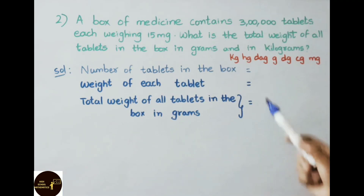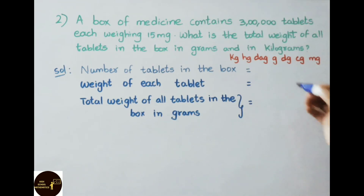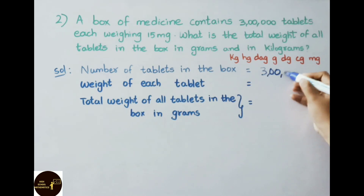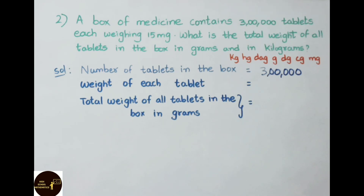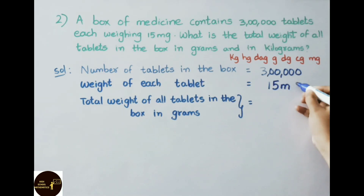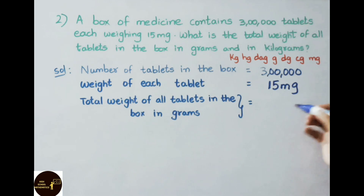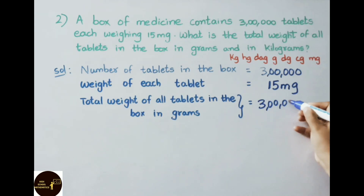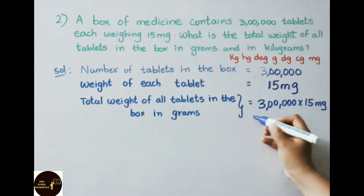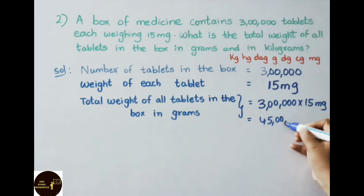Let us see the solution. Number of tablets in the box: 3 lakh. Weight of each tablet is 15 mg. Now they ask us to find the total weight of all tablets in the box in grams. We shall multiply these two values: 3 lakh multiplied by 15 mg equals 45 lakh mg.